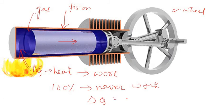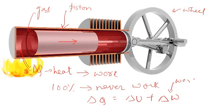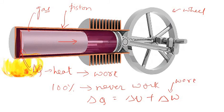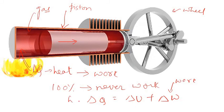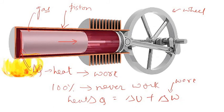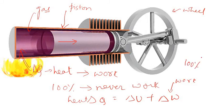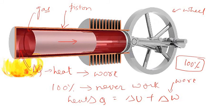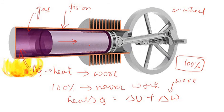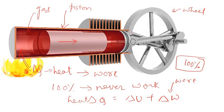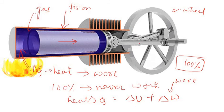Only some percentage of heat can be converted into work. Delta q equals delta u plus delta w, where this is work, this is internal energy or rise in temperature or expansion, and this is the heat energy. Heat energy fully does not convert into work. If that happens we will have 100% efficient engines, which is impossible to make because some amount of heat always goes apart in form of friction or whatever we do. 100% heat cannot be converted into work done.